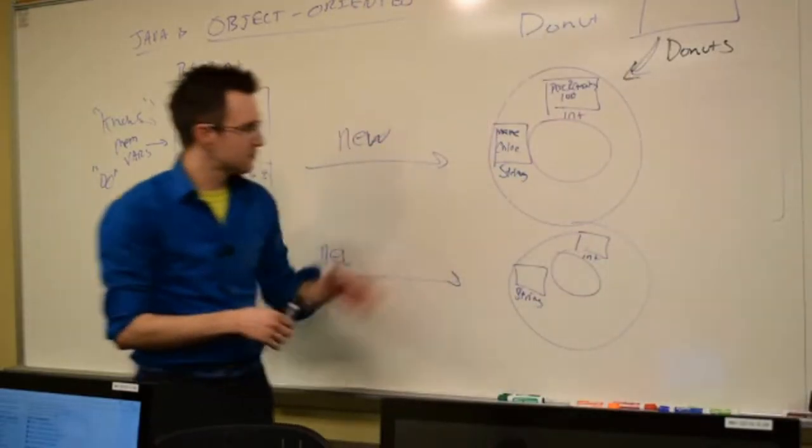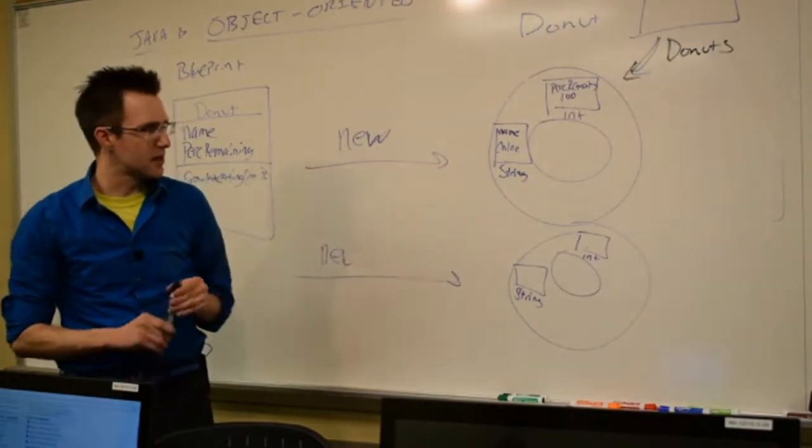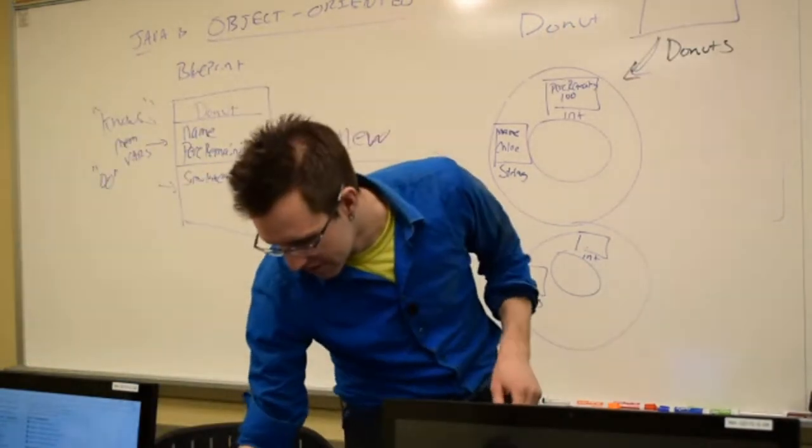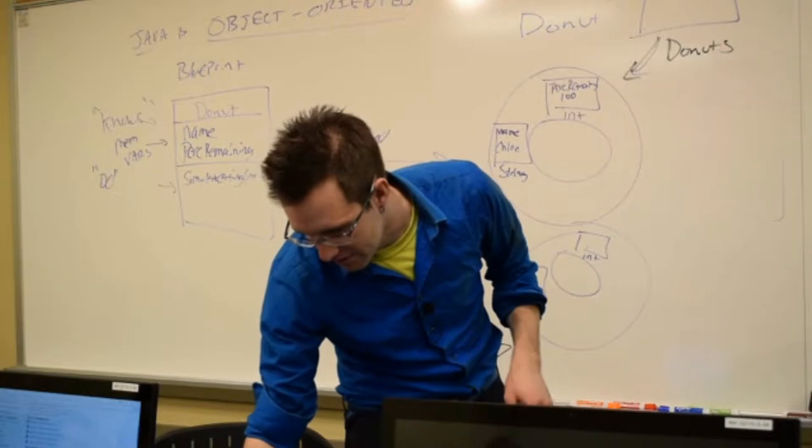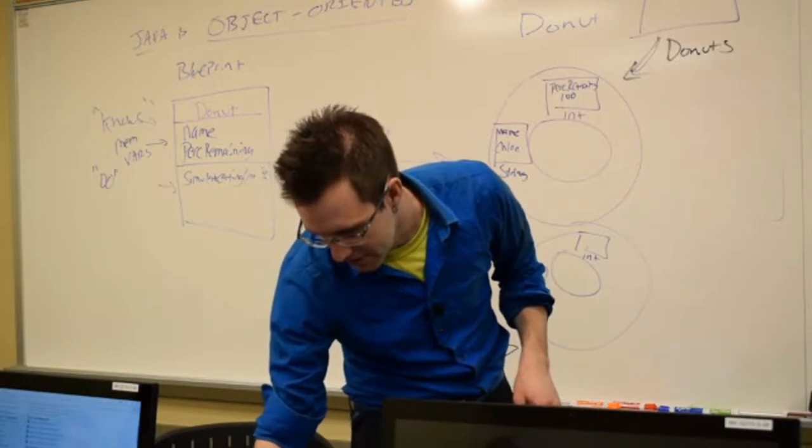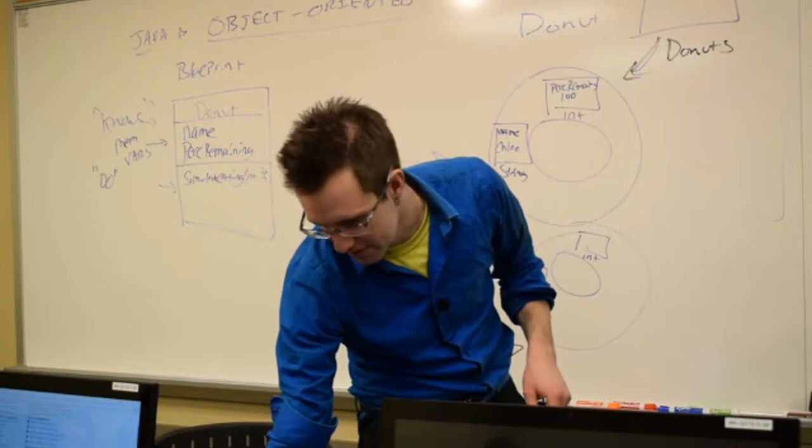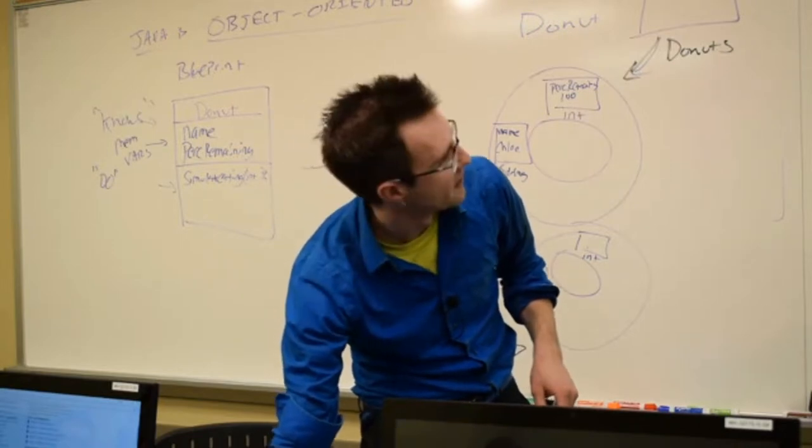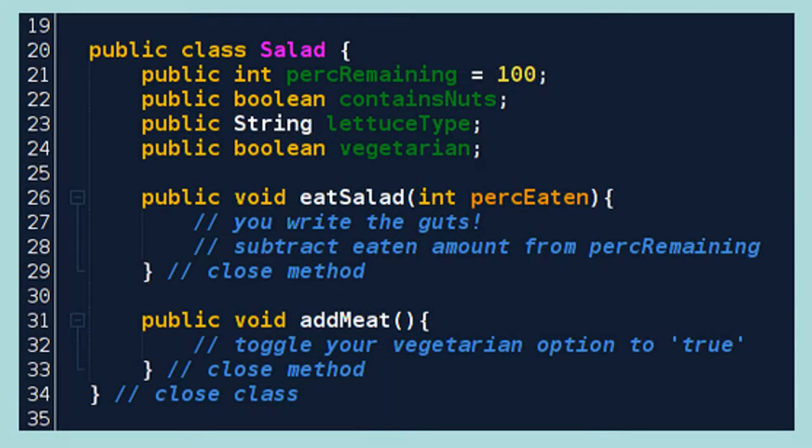we just made donut objects and we printed them out last time. How many of you got a chance to work on the mini project for this lesson, where you were making different types of foods? For example, I suggested you could make a salad.